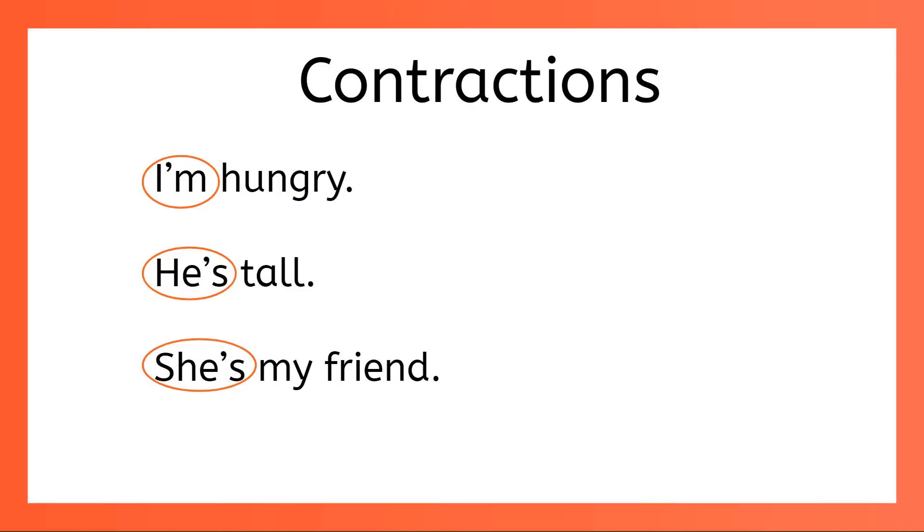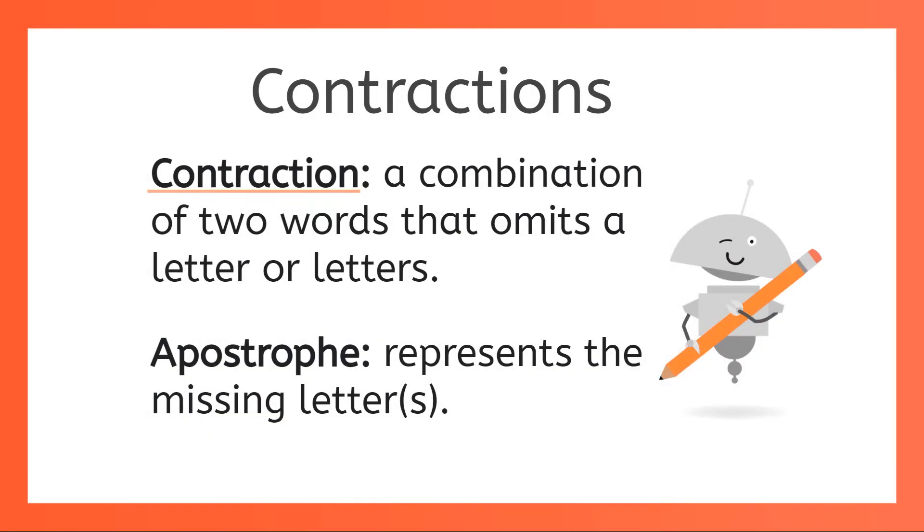These word combinations are called contractions, and because we say them, we can also write them. A contraction is a combination of two words that omits or leaves out one or more letters. And an apostrophe is a punctuation mark that we use to show where those letters are missing.